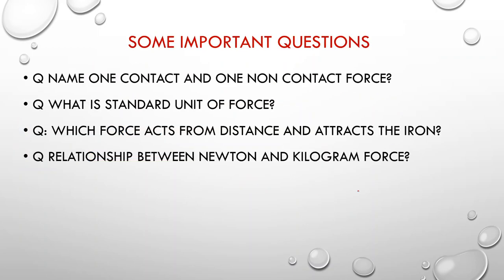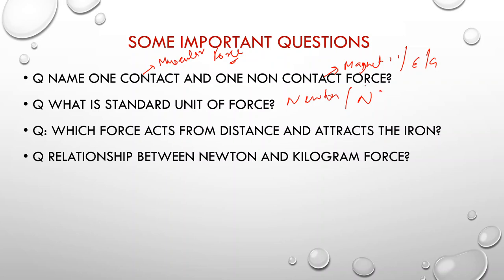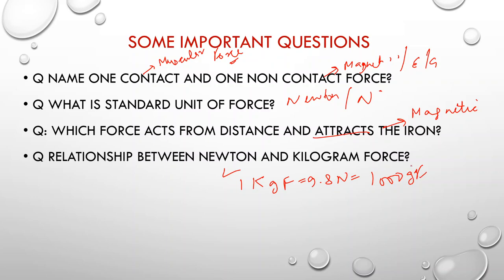Before moving ahead, let's discuss some important questions. Name one contact and one non-contact force — contact force is muscular force; non-contact forces include magnetic force, electrostatic force, and gravitational force. What is the standard unit of force? It is Newton, unit N. Which force acts from a distance and attracts iron? That is magnetic force. Relationship between Newton and kilogram force: 1 kgf equals 9.8 Newton, and 1 kgf equals 1000 gram force.